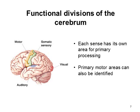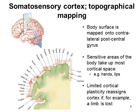It's not possible just by looking at the brain to identify where functions lie, but it is possible due to functional mapping. Each sense has its own primary area for processing: we have the primary motor cortex and the somatic sensory cortex identified either side of the central sulcus. The visual processing area lies in the occipital lobe, and the auditory lies in the temporal lobe.